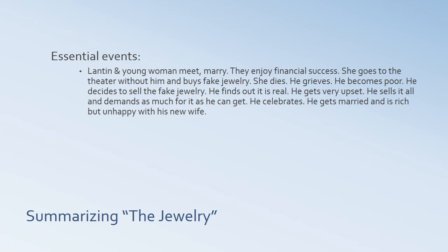What are the essential events? Lantan, our main character, meets a young woman and they get married. They enjoy financial success despite the fact that he doesn't make a great deal of money. She starts going to the theater a lot and always buys fake jewelry, which he doesn't like. Then she dies; he grieves, almost dying himself. He becomes very poor. He decides to sell the fake jewelry and discovers it's real. At first he's upset, but once he realizes it's worth a lot of money, he sells it all for as much as he can get. The story ends with him now rich, remarried, but unhappy.